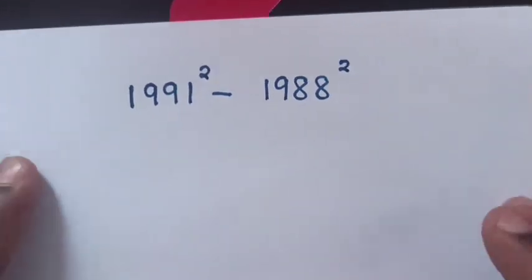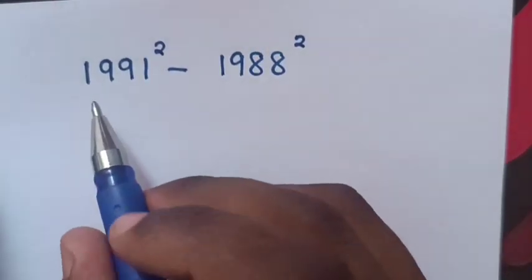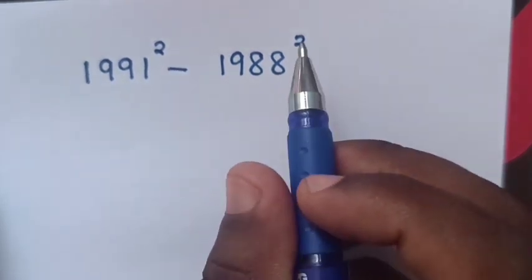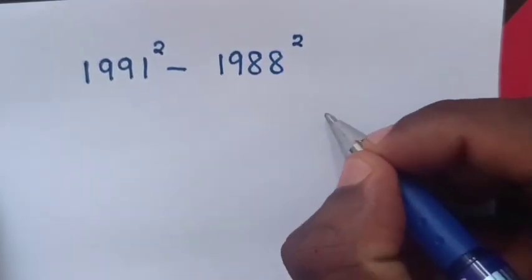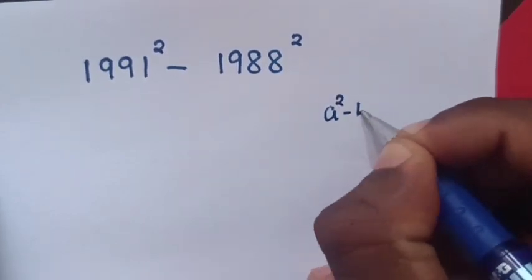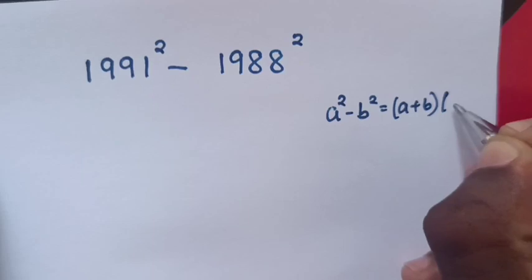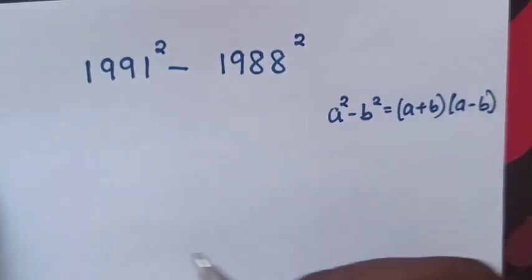Hello, how to solve this without using a calculator? 1991 square minus 1988 square. This expression is in the form that a² - b² equals (a + b)(a - b). Therefore...